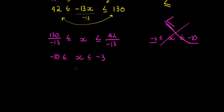So what we have here is that x is between negative 10 and negative 3. If we had to write this in interval notation, we would say x is an element of the interval from the smallest one, negative 10, to the largest, negative 3.